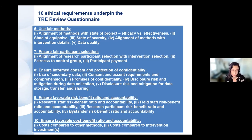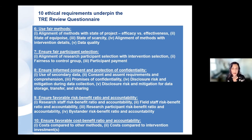The ninth requirement is to ensure a favorable risk-benefit ratio and accountability for that ratio. This requires looking at risk-benefit ratios for research staff, field staff, research participants, and bystanders — assessing whether potential risks and harms to these groups are mitigated or balanced by expected benefits. The tenth requirement is to ensure a favorable cost-benefit ratio and accountability. This requires comparing the costs of the proposed methods against other methods, and also comparing the costs of the research to the investment dollars themselves, putting the cost of the research relative to the cost of the interventions or policies being studied.